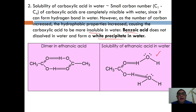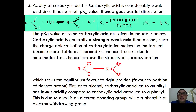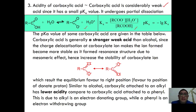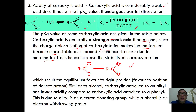Carboxylic acid is considered a weak acid. The dissociation equation is: RCOOH + H₂O ⇌ RCOO⁻ + H₃O⁺, with Ka expressed accordingly. Generally, carboxylic acid is a stronger weak acid compared to alcohol. This is due to charge delocalization in the carboxylate ion, which forms a resonance structure via the mesomeric effect, increasing stability of the ion. As a result, equilibrium favors the right, making carboxylic acids more acidic than alcohols.